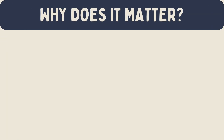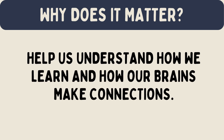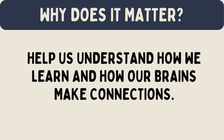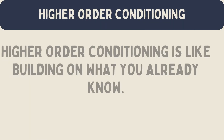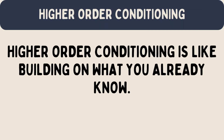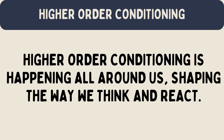Understanding higher order conditioning can help us understand how we learn and how our brains make connections. It shows us that our brains are always looking for patterns and connections, even in things we might not realize. Higher order conditioning is like building on what you already know — it's how we learn to connect new things with things we already understand. From dogs and bells to burger logos and hunger, higher order conditioning is happening all around us, shaping the way we think and react.